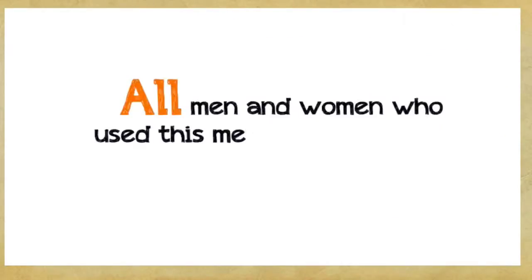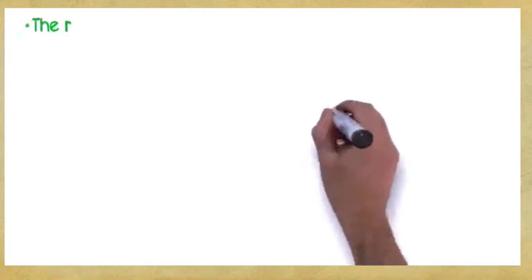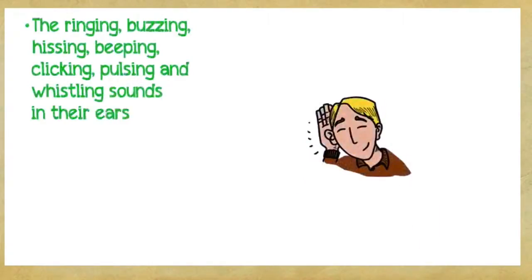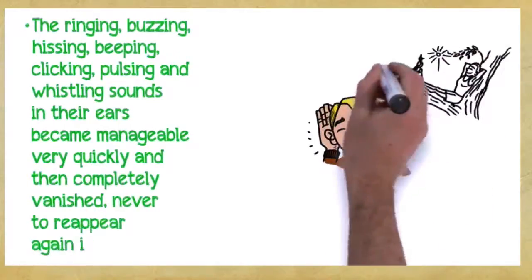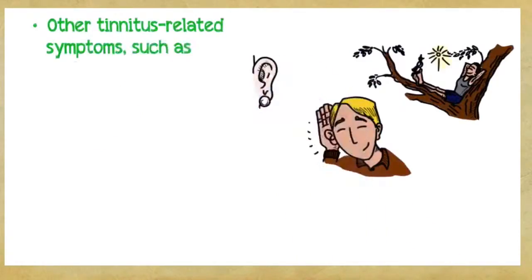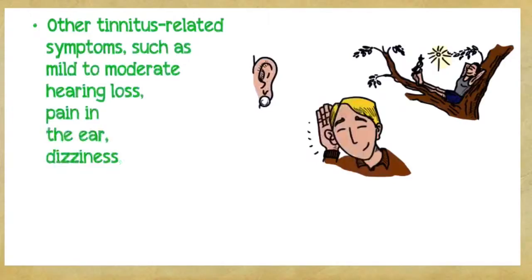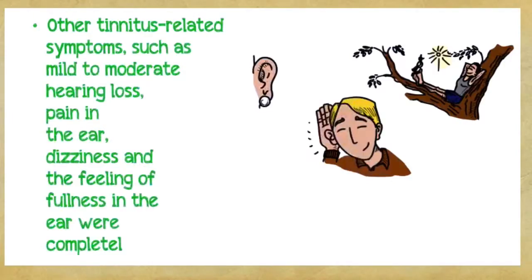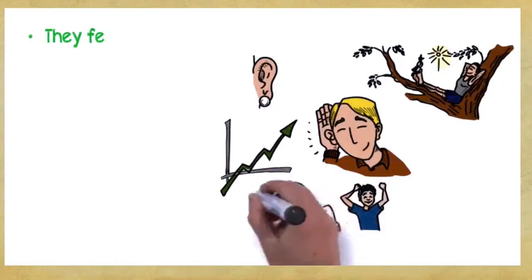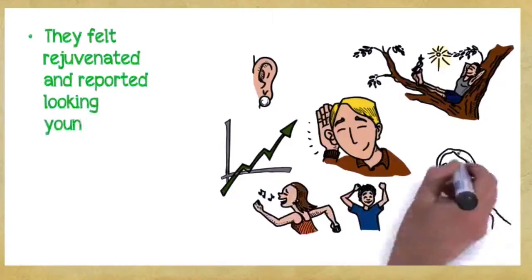All men and women who used this method experienced the following benefits: The ringing, buzzing, hissing, beeping, clicking, pulsing, and whistling sounds in their ears became manageable very quickly and then completely vanished, never to reappear again in less than 30 days. Their feelings of tension, anxiety, agitation, and exhaustion from tinnitus vanished. Other tinnitus-related symptoms such as mild to moderate hearing loss, pain in the ear, dizziness, and the feeling of fullness in the ear were completely eliminated. They felt happier, calmer, and more energetic. They felt rejuvenated and reported looking younger and more vibrant.